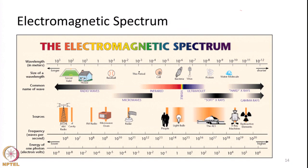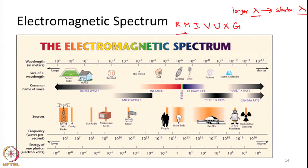For our convenience and to understand better, we have divided this electromagnetic spectrum into different portions and given each portion a name. Based on the wavelength or frequency, the entire spectrum is divided into several portions. I will move from longer wavelength to shorter wavelength. The symbol lambda is conventionally used to denote wavelength. The order from longer to shorter wavelength is: R, M, I, V, U, X, G.